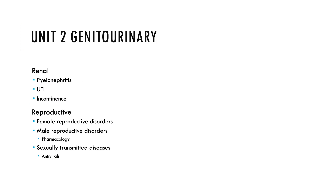Genitourinary is a combo unit split from renal and reproductive. You need to know about pyelonephritis, UTI, and incontinence — what the nursing interventions are, why patients have one or the other, what causes it, and how we treat and diagnose those. For reproductive, we need to know male and female reproductive disorders, usually related to aging, genetics, or trauma. What does it mean to have menopause, fibroids, or uterine fibroids? What is BPH — benign prostatic hypertrophy? How do we treat those? What are the medications? You will need to know the medications for BPH and for erectile dysfunction.